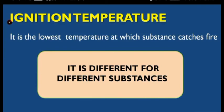The ignition temperature of kerosene is different from petrol, and different for wood. For example, when kerosene is spilled on the floor and a matchstick burning nearby is brought close, it suddenly catches fire. But wood catches fire slowly, meaning wood has a higher ignition temperature.